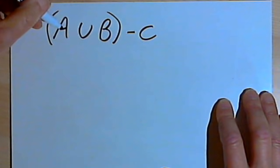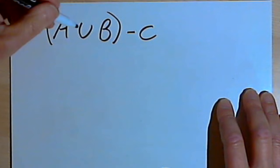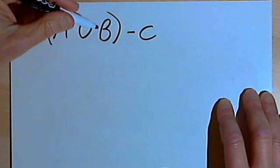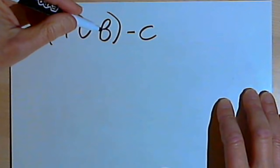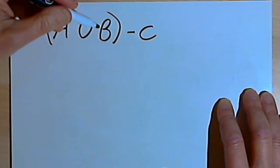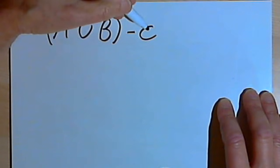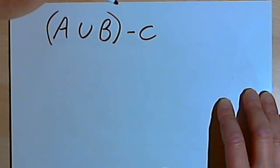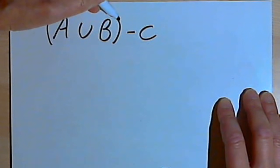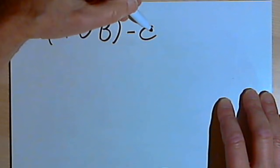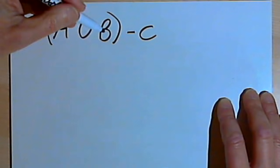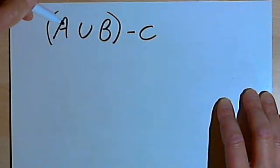In this one I've got the union of A and B, but from that I'm subtracting out — taking away — anything that was in set C. So in other words, I'm going to have the relative complement of C in the union of A and B.